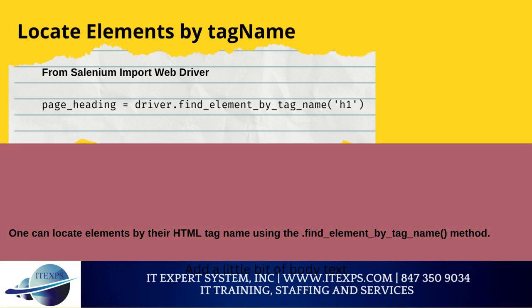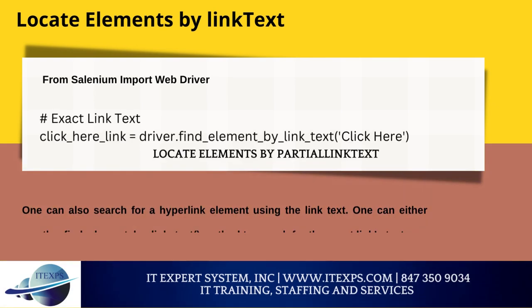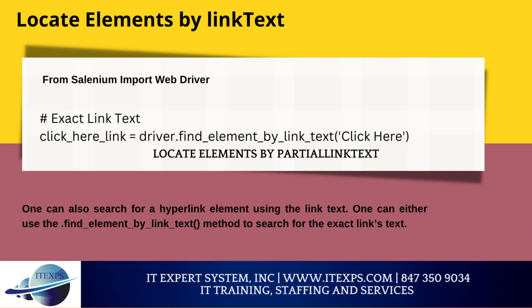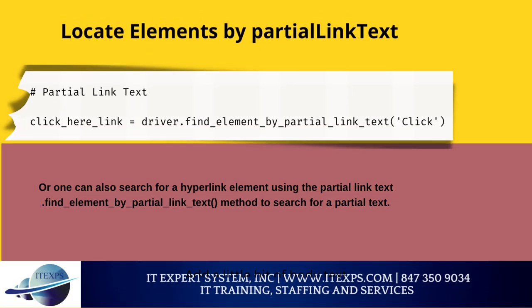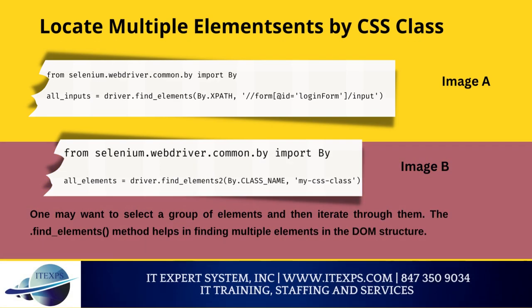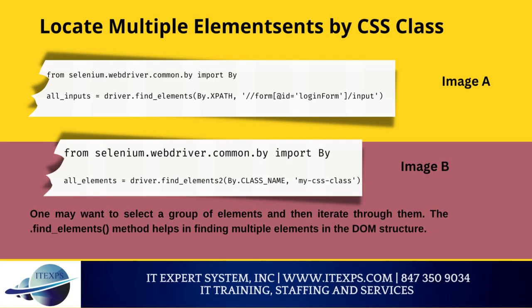One can locate elements by their HTML tag name using find element by tag name. One can also search for a hyperlink element using link text via find element by link text, or using partial link text via find element by partial link text to search for a partial match. To locate multiple elements, the findElements method helps find multiple elements in the DOM structure. For example, to find all input elements of a form with ID 'login form', or to locate all elements with a class name.